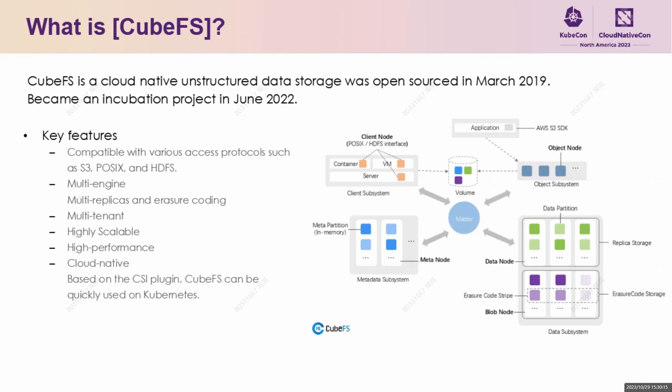Sharding is performed within the data and metadata node. In the sharding dimension, we form a replica group to maintain strong availability. At the same time, CubeFFS is a high-performance system. Our metadata system supports a full-memory metadata organization based on B-tree. We will create a multi-level cache system, especially on the client side. We have made many optimizations, including GPU direct storage, which will be discussed later. We are also making adjustments in terms of architecture for the hybrid cloud.